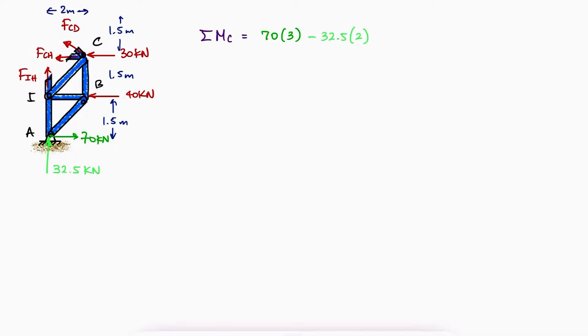Since both CD and CH pass through joint C, a sum of moments about C should be the first equation, as it will allow us to solve for FIH right away.